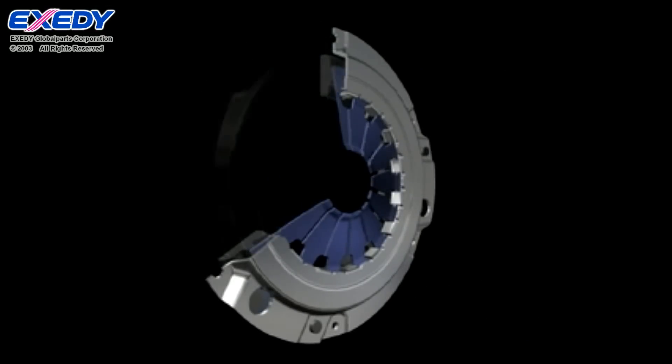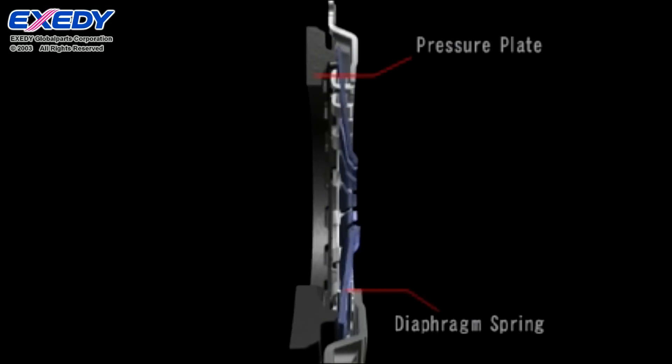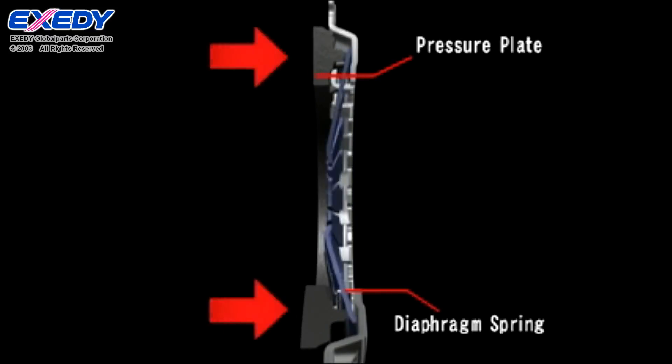The clutch cover's diaphragm spring is a disc-shaped spring that presses against the pressure plate and controls the amount of pressure applied.